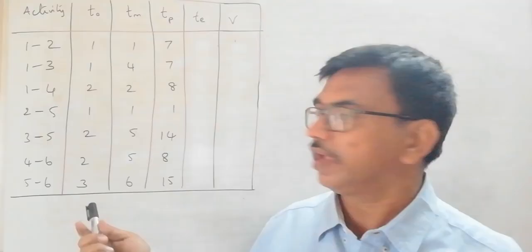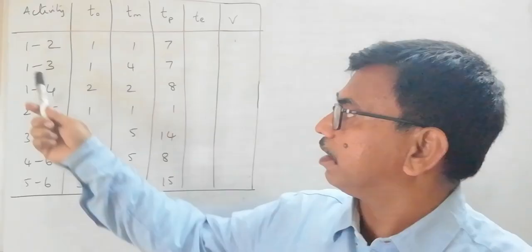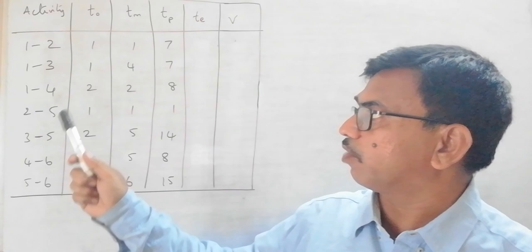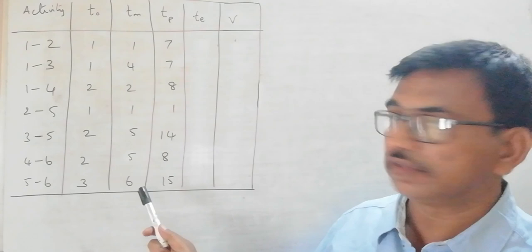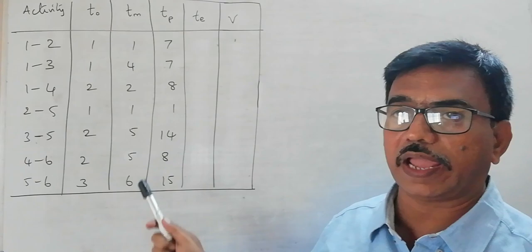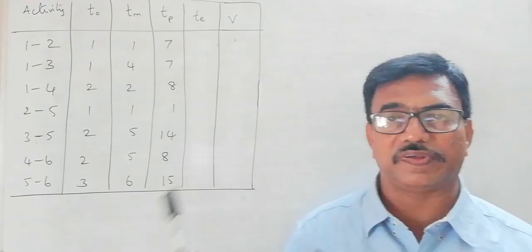Here we can see a set of activities like 1 to 2, 1 to 3, 1 to 4, 2 to 5, 3 to 5, 4 to 6, and 5 to 6. And we have 3 different time estimates denoted as T0 for optimistic time, TM for most likely time, and TP for the pessimistic time estimate.